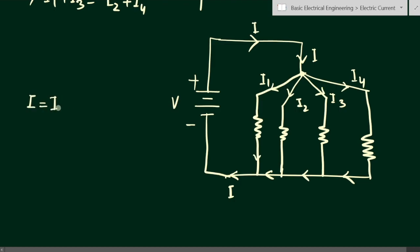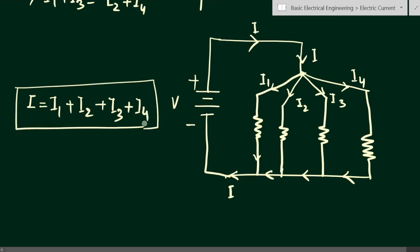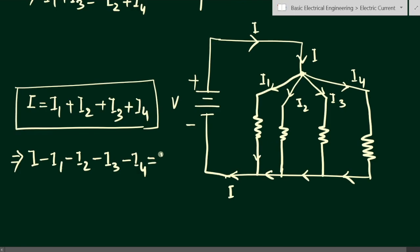As per Kirchhoff's Current Law, we write: I equals I1 plus I2 plus I3 plus I4. By the definition that the algebraic sum of currents at a junction is zero, we get: I minus I1 minus I2 minus I3 minus I4 equals zero. The entering current is positive and all leaving currents I1, I2, I3, I4 are negative.